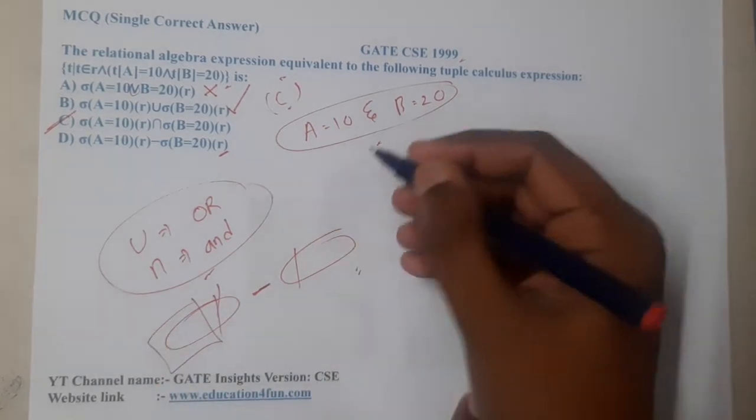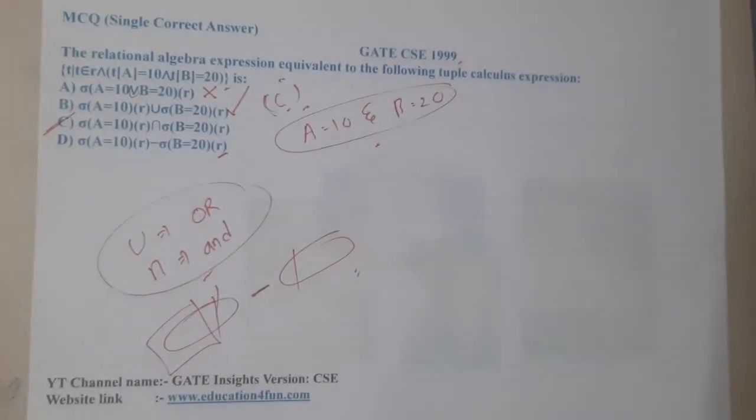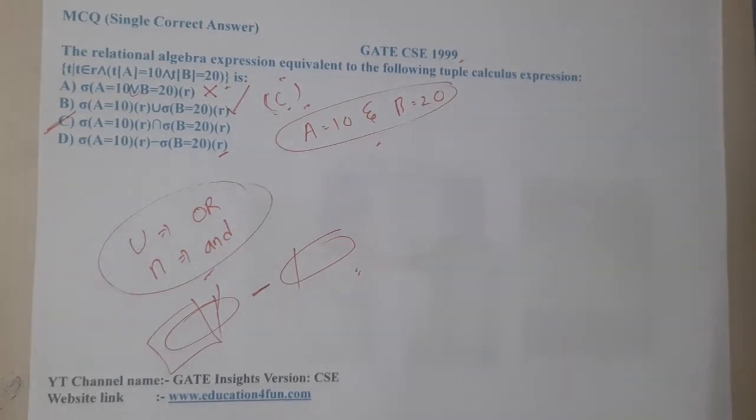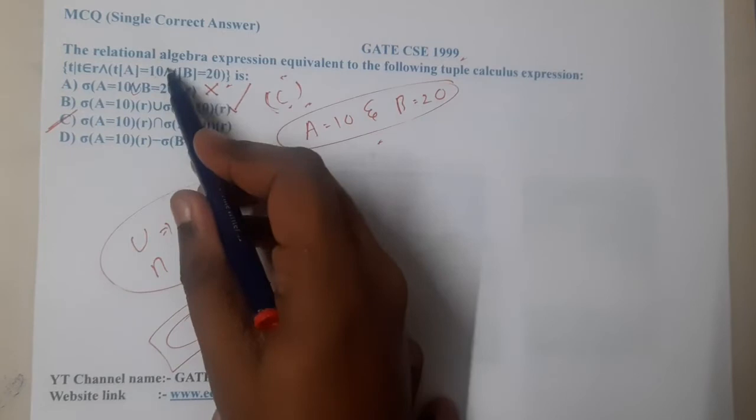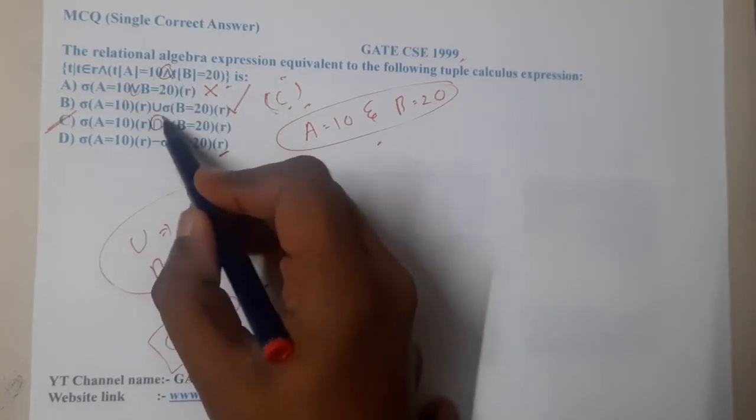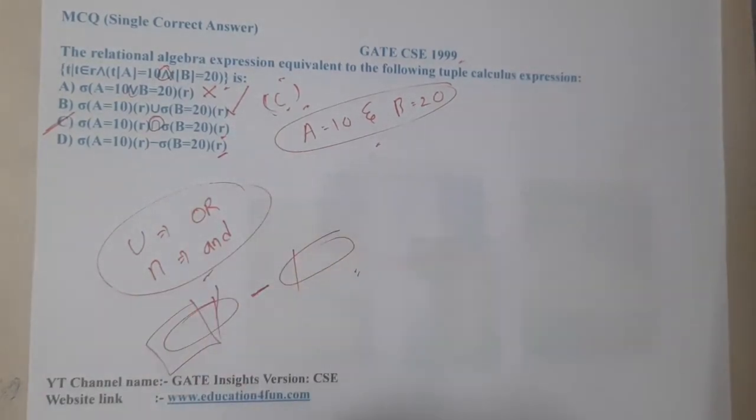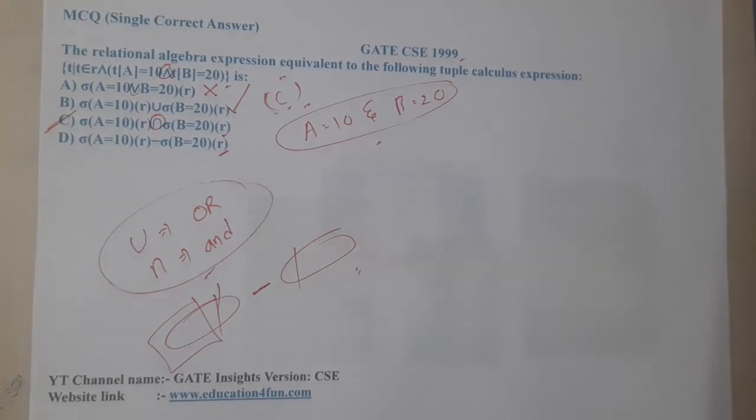Basically, C will be the most appropriate correct answer. To be clear, students who have studied sets can directly relate it. Whenever we are writing AND, most probably intersection could be the most nearest relation. They will be exactly same.